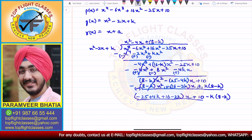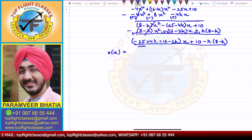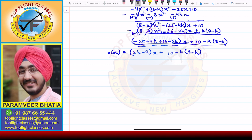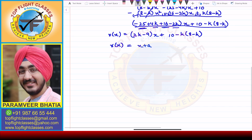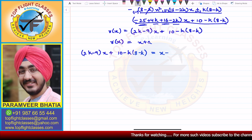So this is the remainder. Simplifying: for the x coefficient, minus 25 plus 16 gives minus 9, and 4k minus 2k gives 2k, so the coefficient of x is (2k minus 9). The constant term is 10 minus k(8 minus k). So r(x) = (2k minus 9)x plus 10 minus k(8 minus k). But the given r(x) = x plus a. So (2k minus 9)x plus 10 minus k(8 minus k) = x plus a.